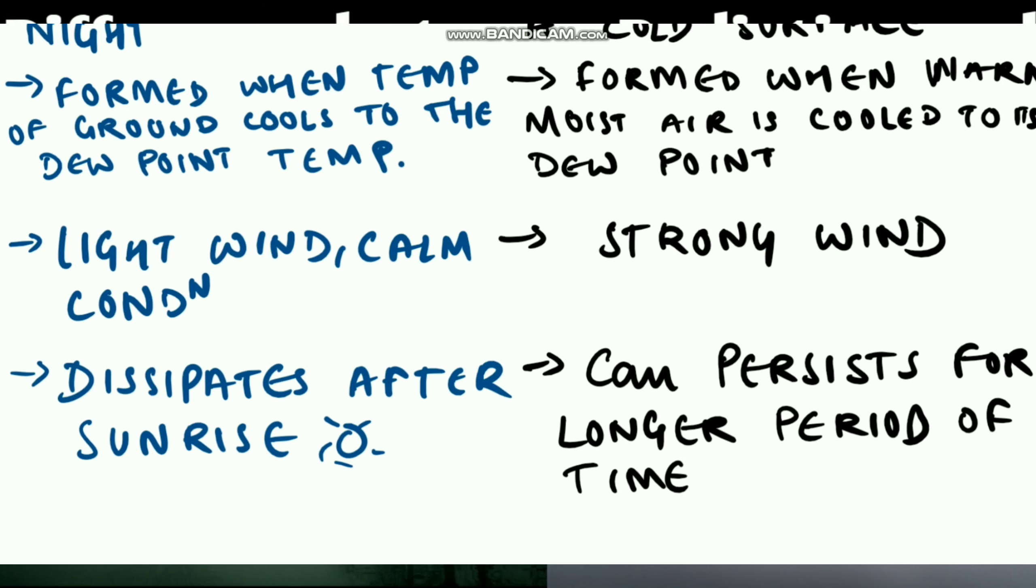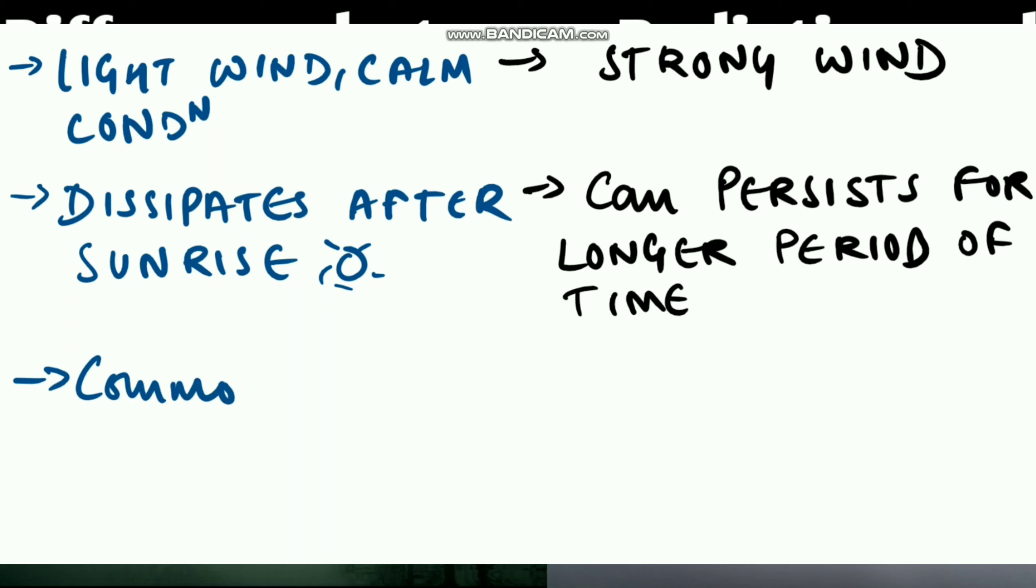Radiation fogs are common in fall and winter months, whereas advection fog can occur all around the year.